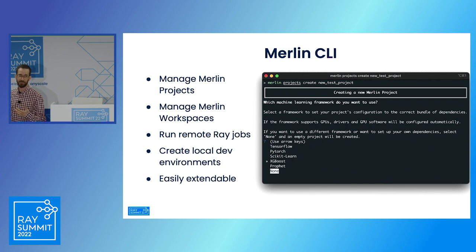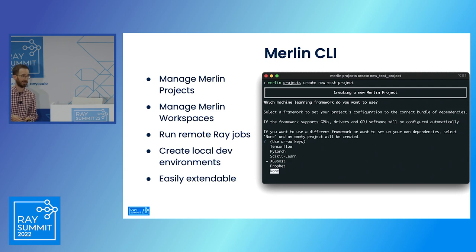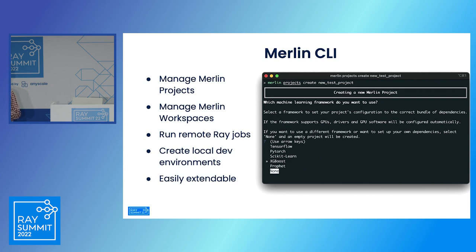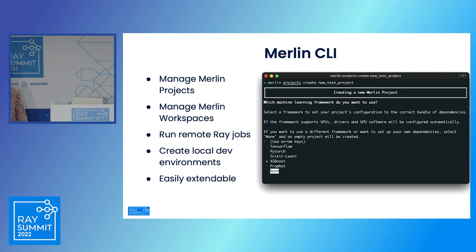We also added a CLI for our platform. That CLI allows users to create and manage their Merlin projects, create and manage their Merlin workspaces through the API, run remote Ray jobs from their laptop by wrapping local artifacts and sending them to the remote Ray cluster for fast iterations, and create a local dev environment. The command shown creates a new Merlin project, which walks users through a wizard for choosing dependencies, and is easily extendable as we add more features to the platform.